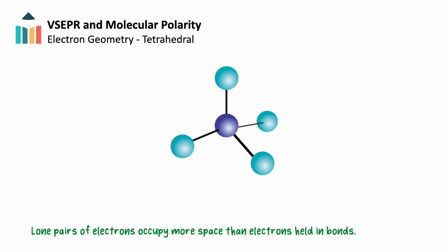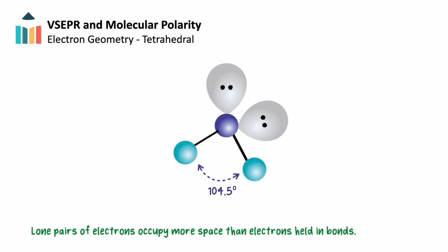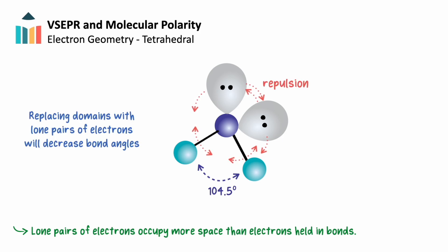The number of lone pairs of electrons in a structure will also have an impact on the structure's expected bond angles. The expected bond angles of a tetrahedral are each 109.5 degrees. However, when we replace one of our domains with a lone pair of electrons, we see a decrease in the measured bond angle from 109.5 degrees to 107. Replacing a second domain decreases the bond angle even further, from 107 degrees to 104.5. This is because each additional lone pair of electrons will occupy a bit more space than the electrons stored in bonds, and as a result will cause an increased repulsion with the bonding electrons that will push the bonds inward, decreasing their bond angles.